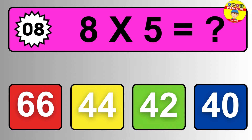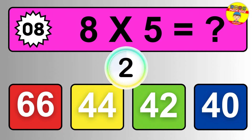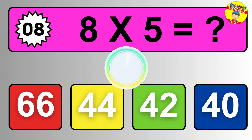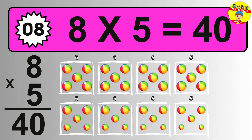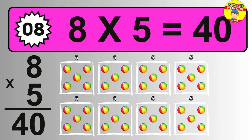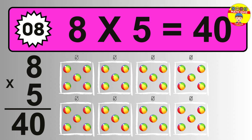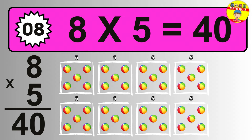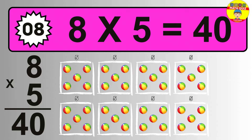Question eight. Eight times five equals what? The answer is eight times five is forty. To calculate, we have eight groups with five balls each one. So how many balls do we have? Forty balls.